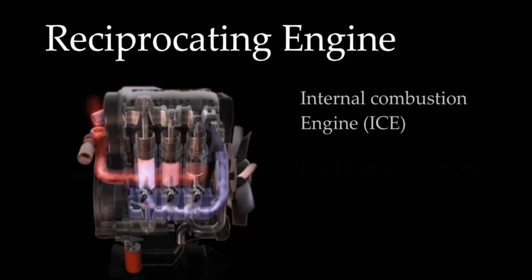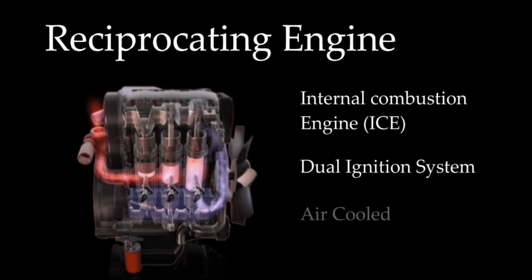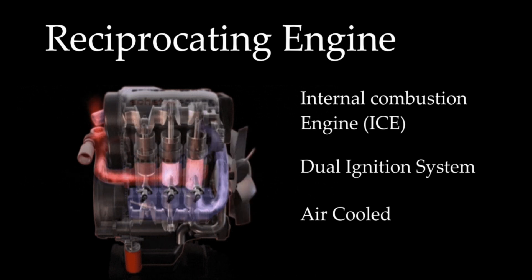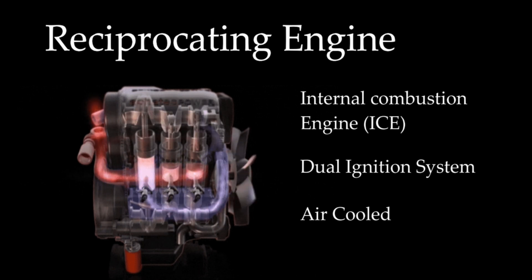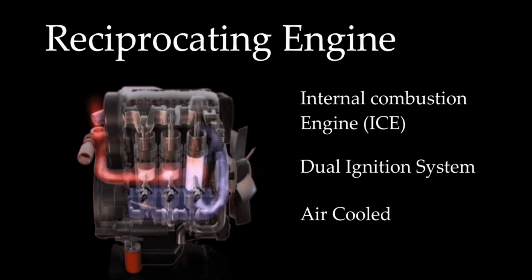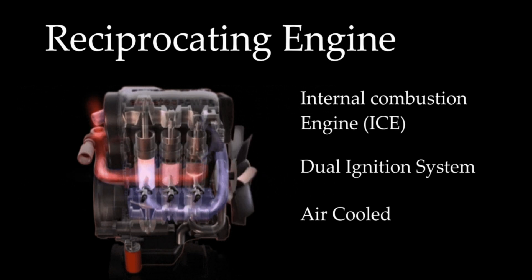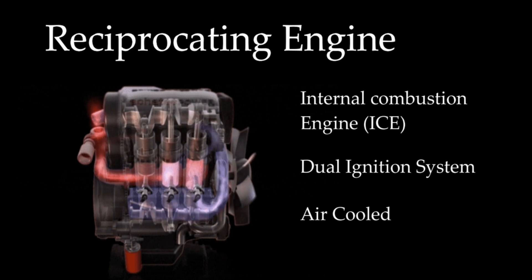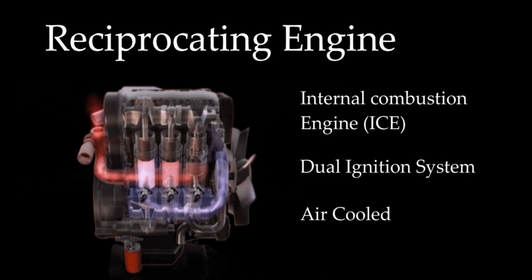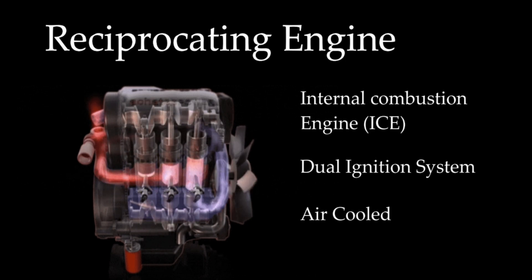An aircraft piston engine is an internal combustion engine that uses one or more reciprocating pistons to convert pressure into rotational motion. The aircraft piston engine operates on the same principles as the engines found in most automobiles. However, modifications such as dual ignition systems to improve redundancy and safety, and air cooling to reduce weight, have been incorporated into engines designed for aviation use.